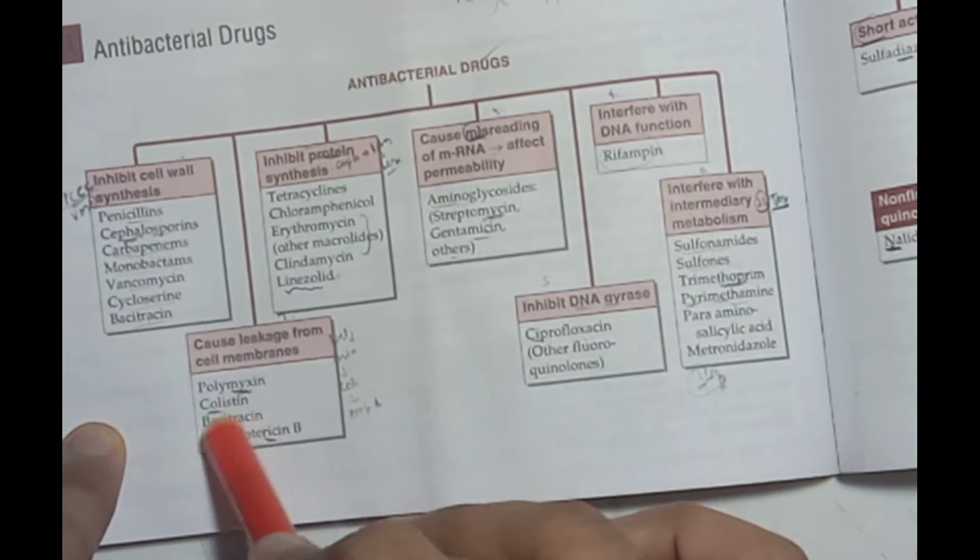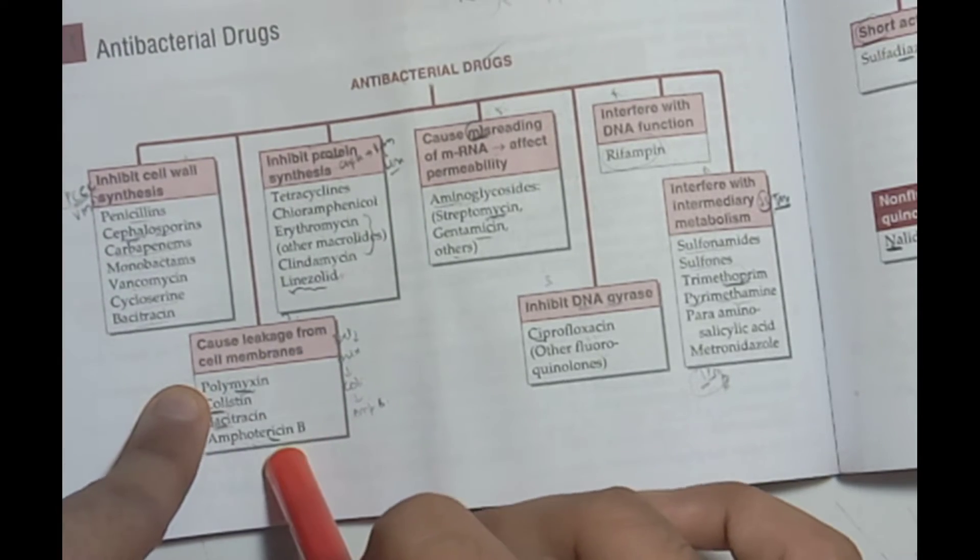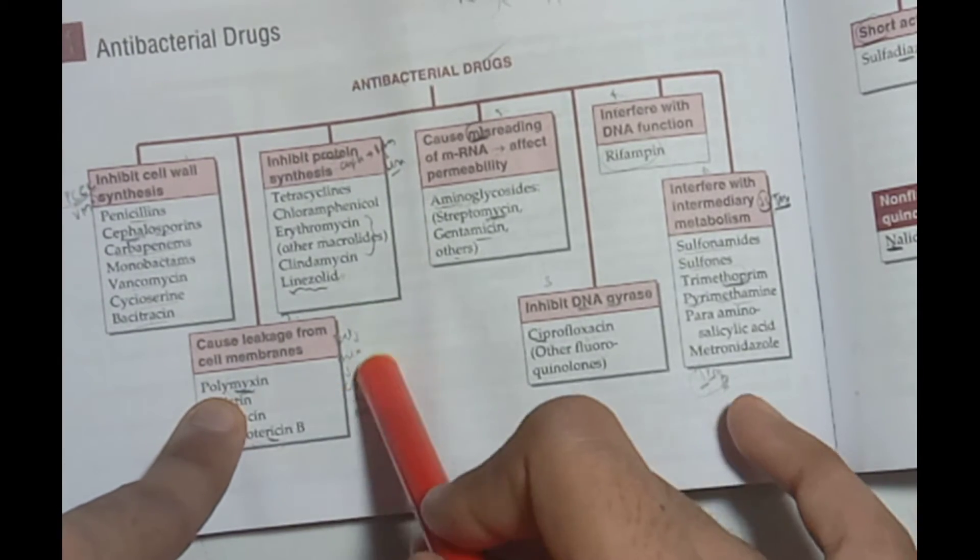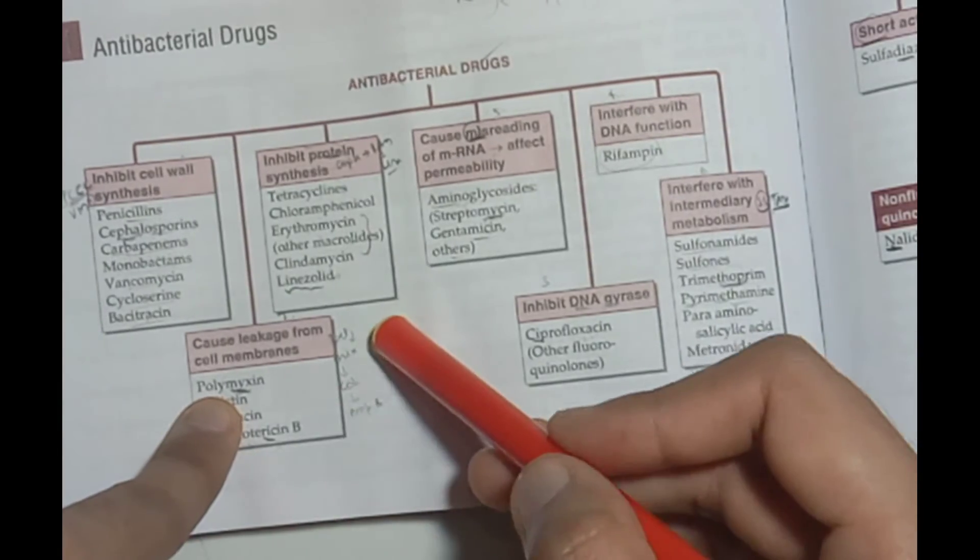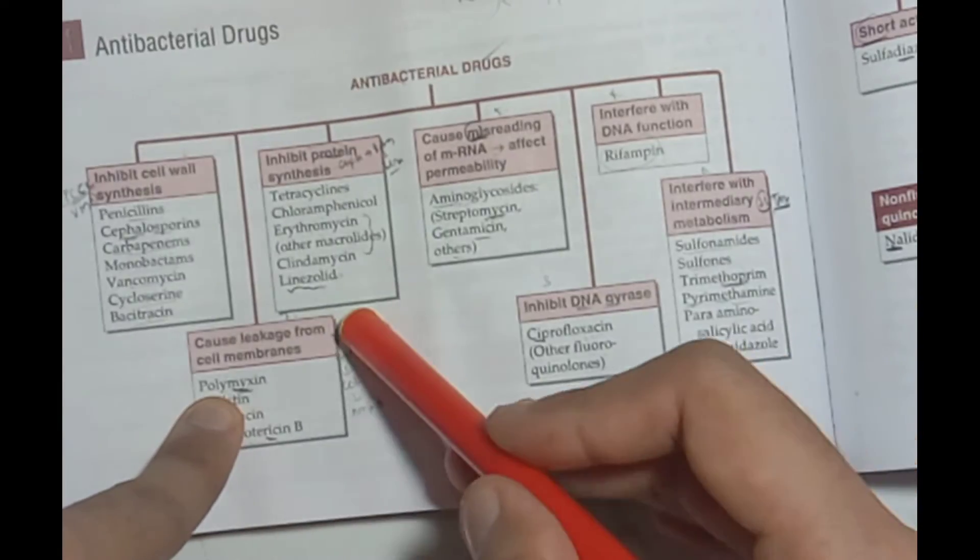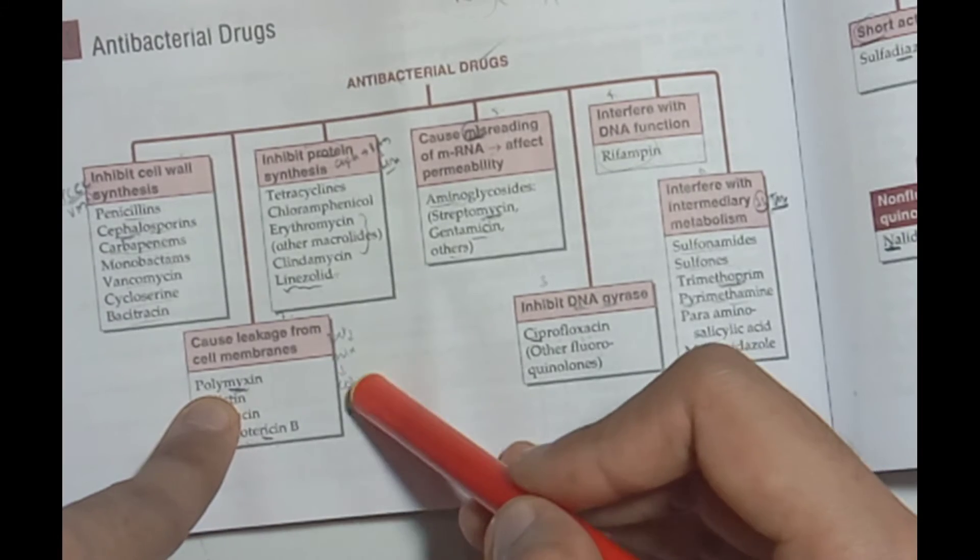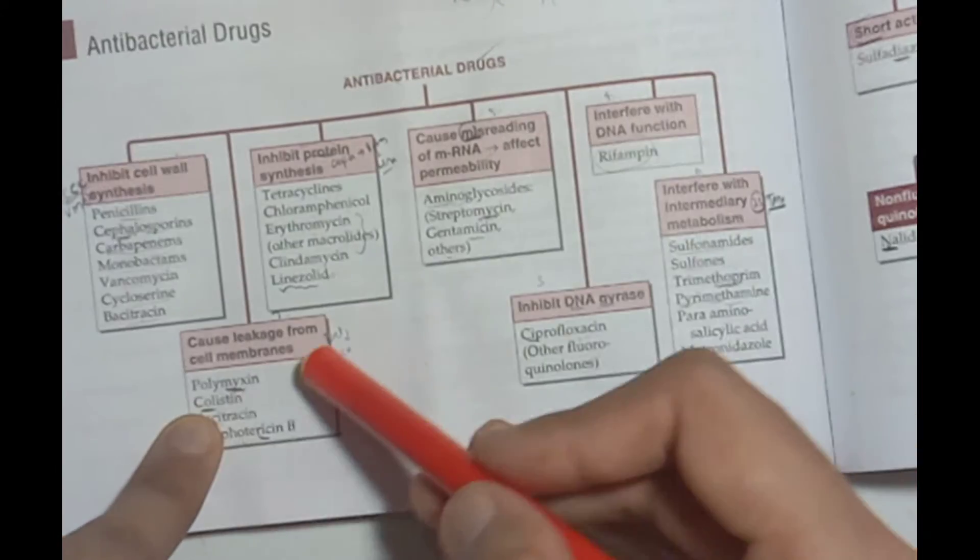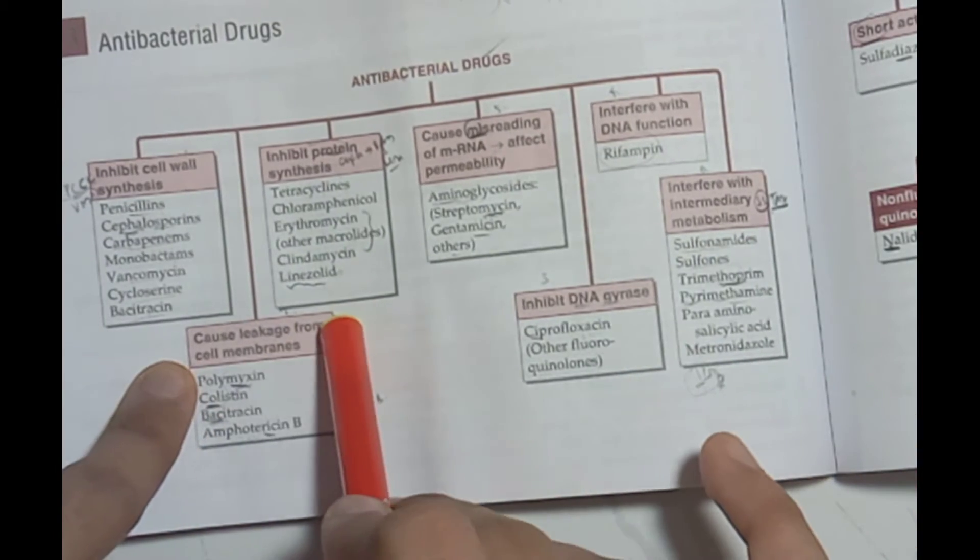For leakage from cell membranes: Bacitracin, Polymixin, Colistin, and Amphotericin B.